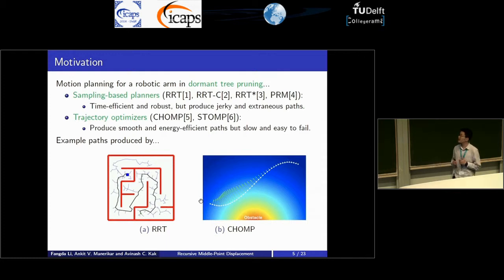The second category is trajectory optimizers, for example, CHOMPS, which stands for covariance Hamiltonian optimization for motion planning. They are known to produce very smooth and energy efficient paths. But they also have a high failure rate and slow planning time.